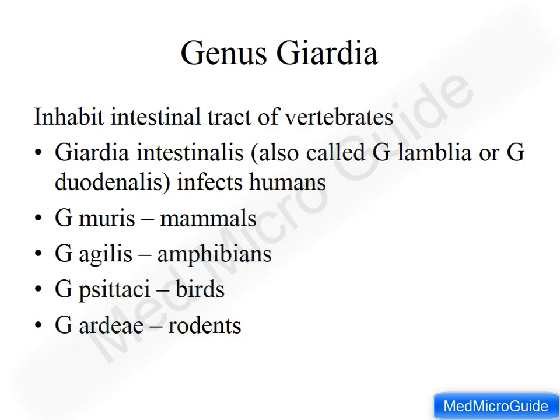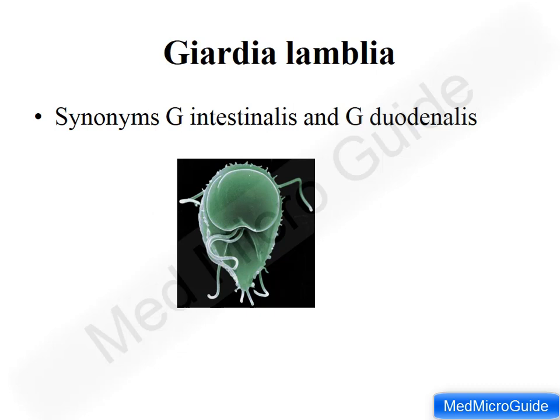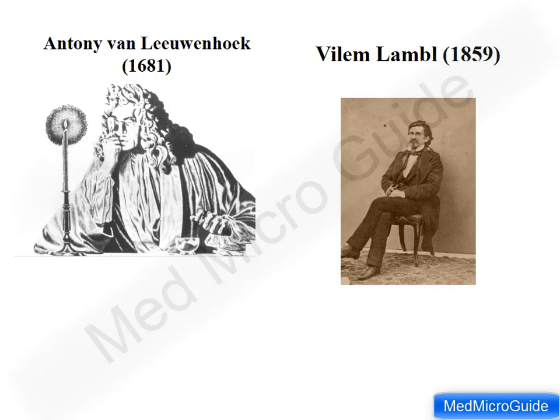Now let's consider Giardia lamblia, which is an important human pathogen worldwide. Giardia lamblia is also known as Giardia intestinalis or Giardia duodenalis. It was first observed by Anthony van Leeuwenhoek through his hand-held microscope. He observed the parasite in his own stool specimen and drew a diagram of it. But until 1859, when William Lamble identified the parasite, it was not established as a pathogen causing diarrhea. Hence the name of the parasite goes with the inventor Lamble — Giardia lamblia.